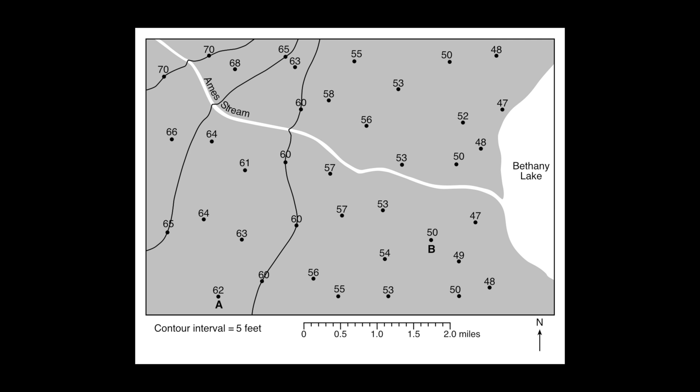That data could be anything from temperatures and precipitation amounts to, in this case, elevation values. Just to look at the map, we have an area with a stream, and we see Bethany Lake there, and this large area of land shown in gray. All over the land, we see different points with values that seem to range from the 40s up to around 70. These values all represent elevations, so if you were to stand at any one of these points, you would know how high above sea level you are at that spot.